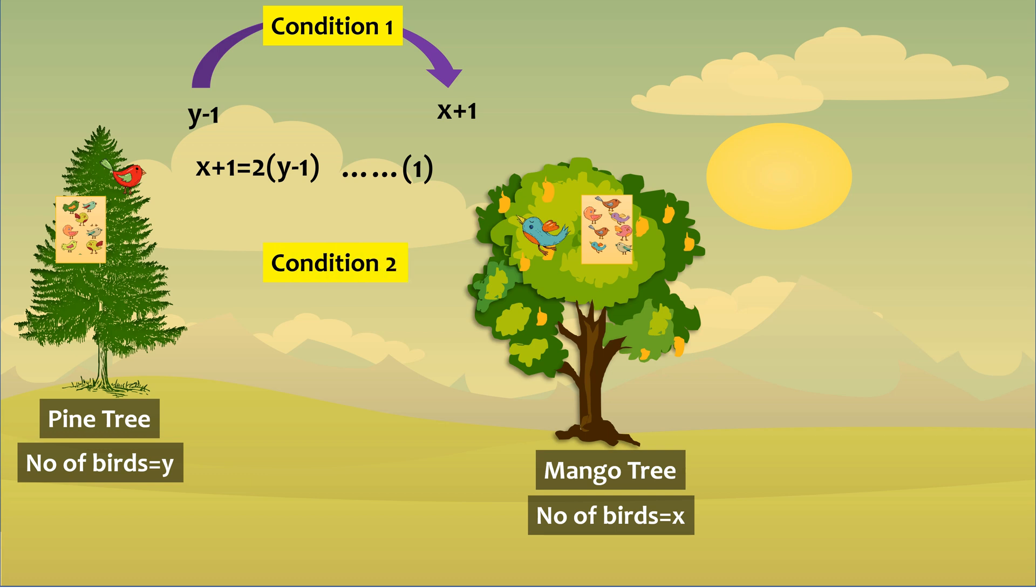Let's move to second condition. So the bird on the pine tree asks for one bird from the mango tree. This transaction if takes place will result in total number of birds on the pine tree being y plus 1 and that on mango tree being x minus 1.